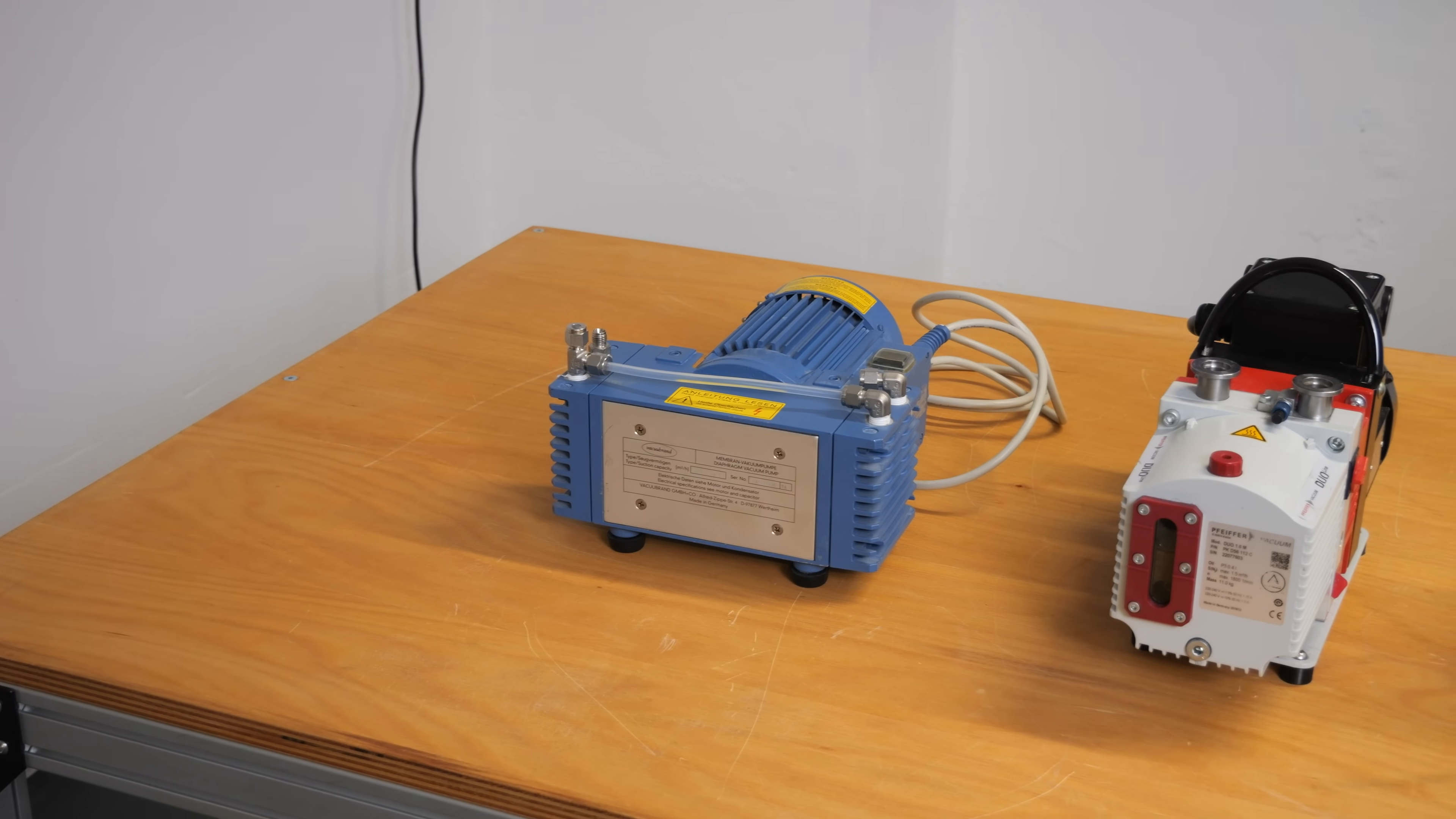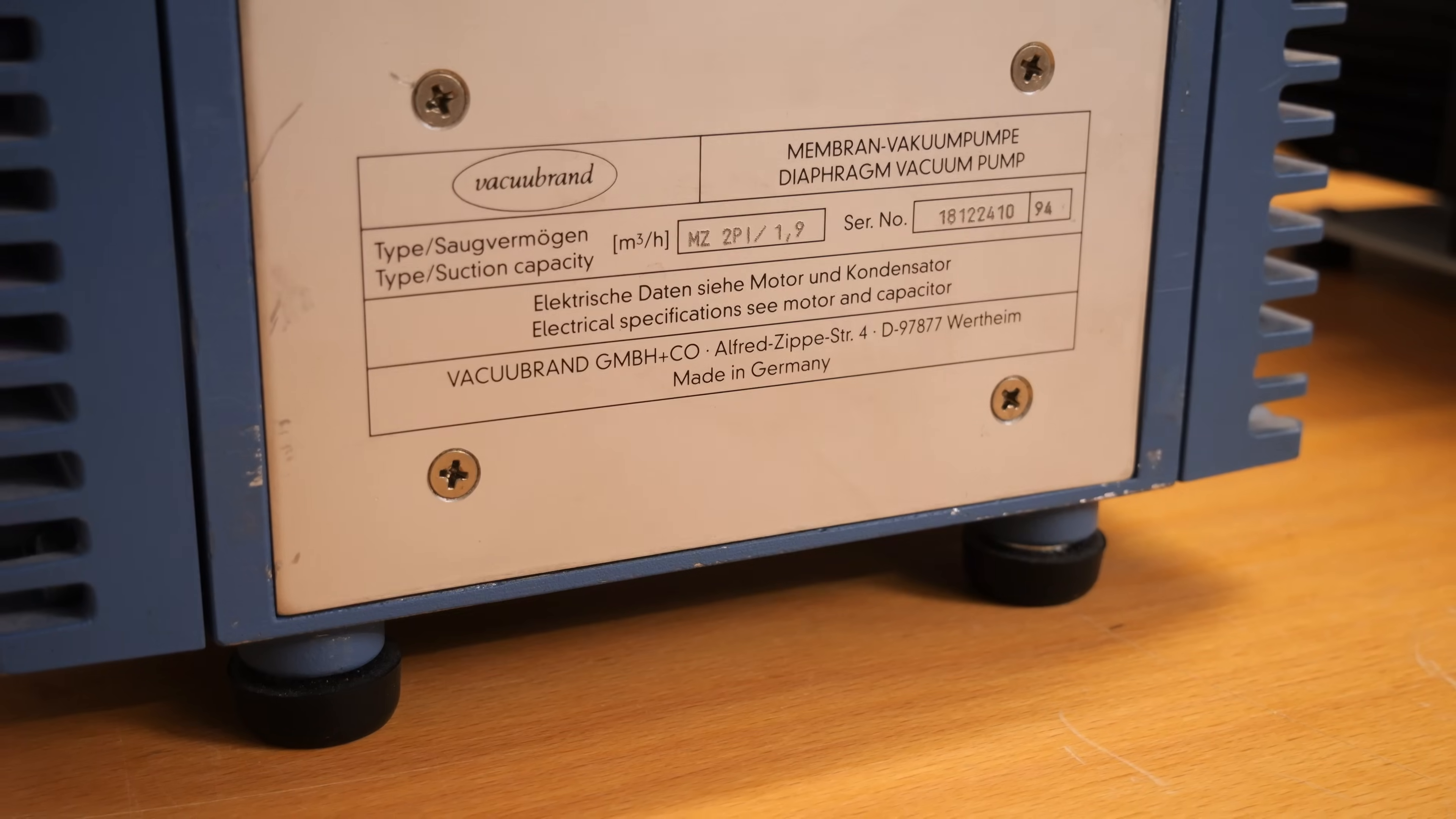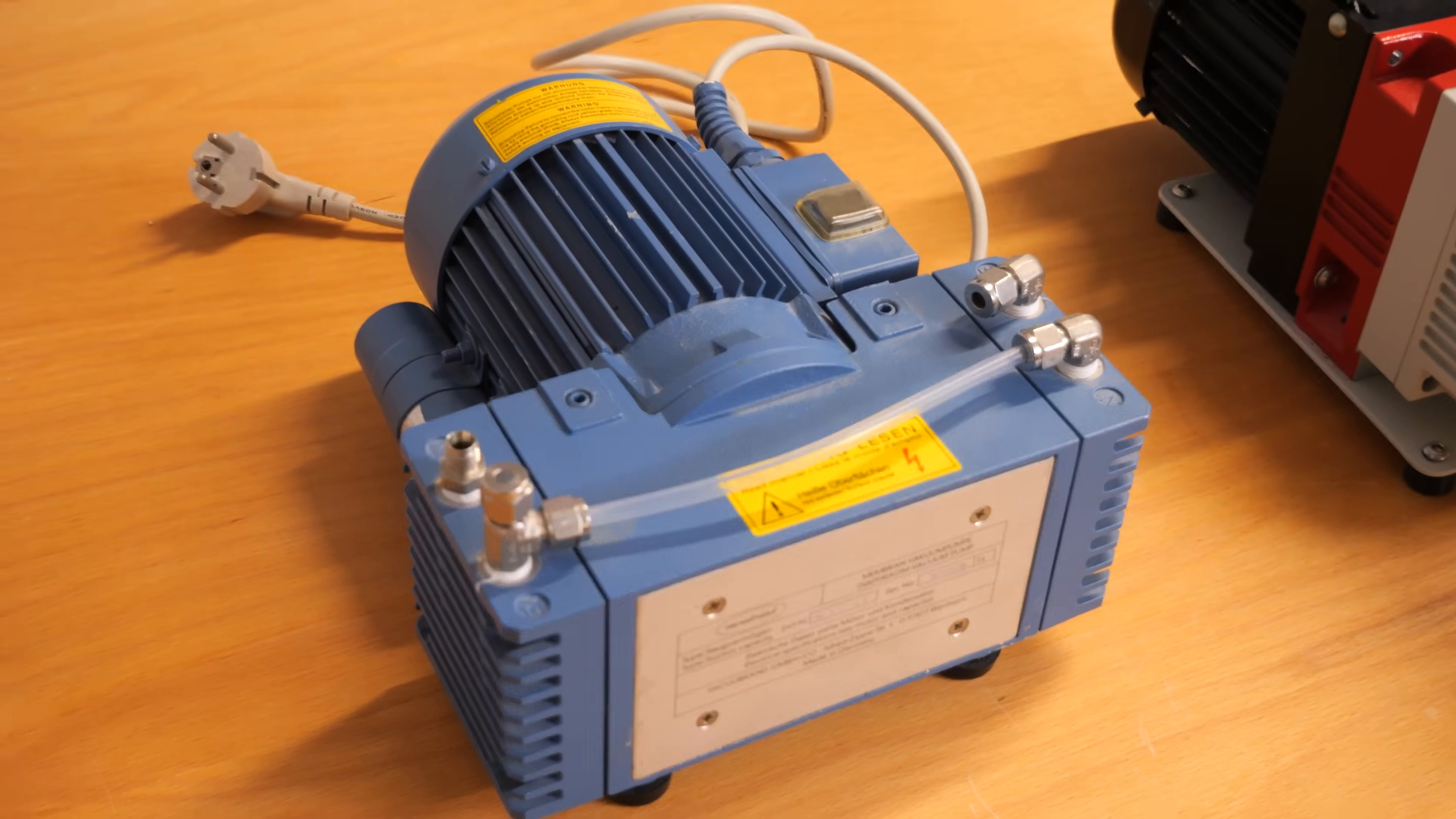There are various types of vacuum pumps, with one of the primary distinctions being the pressure they can achieve. Diaphragm and rotary vane pumps are typically used for higher pressures. Membrane pumps, depending on how many stages they have, can achieve vacuums ranging from 80 millibars to 0.5 millibars. Those pressures fall within the so-called rough vacuum range.